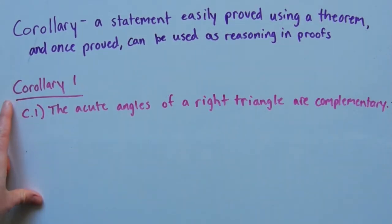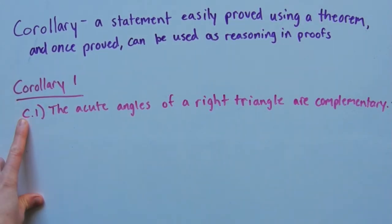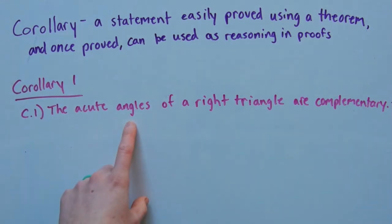The first corollary we're going to learn is corollary 1, denoted as C1. Postulates are P and then a number, theorems are T and then a number, and corollaries will be C and then a number. C1 says the acute angles of a right triangle are complementary.